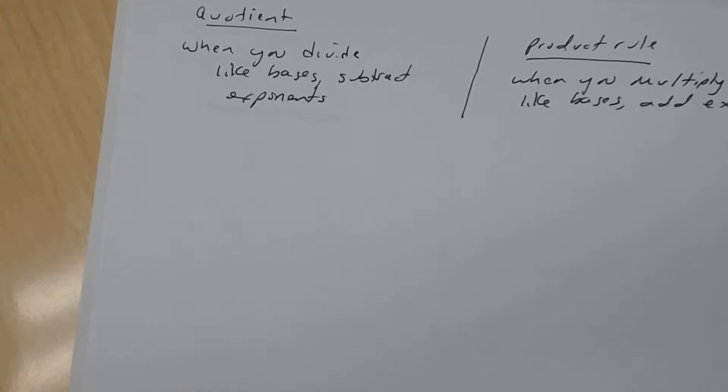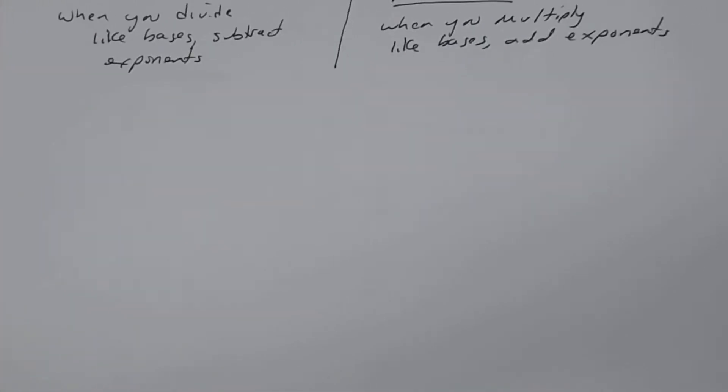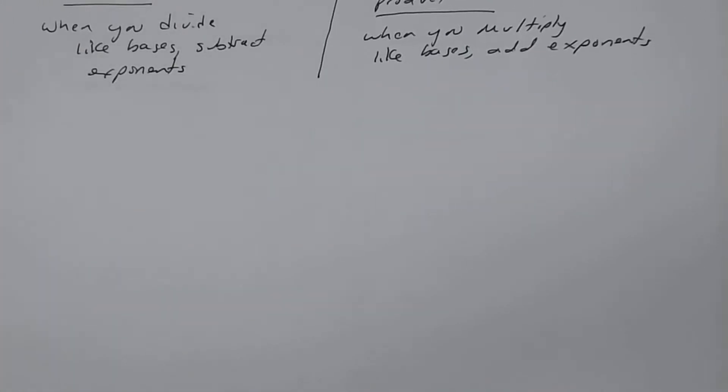And then the product rule — when you multiply like bases, you add exponents.